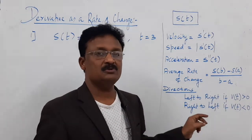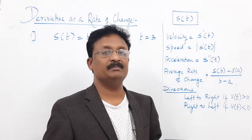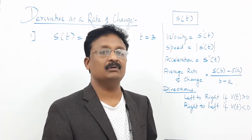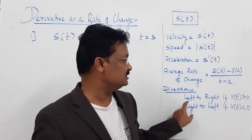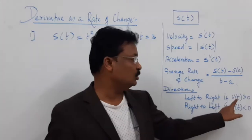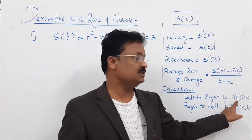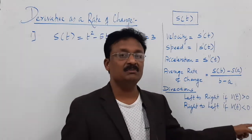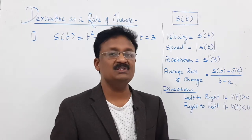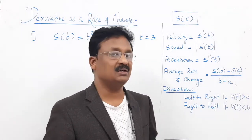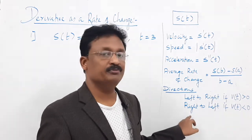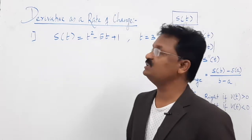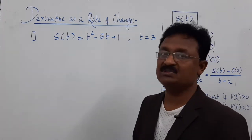Now, how to find the direction of movement of the particle — whether it moves left to right or right to left. If the velocity v(t), which is the first derivative, is positive, the particle moves left to right. If velocity v(t) is negative, the moving particle moves from right to left.